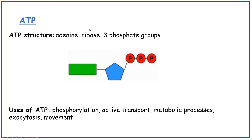ATP structure: adenine, ribose and three phosphate groups. So adenosine is made of an adenine base, a ribose sugar and three phosphate groups. Adenosine triphosphate — because there are three phosphates. Uses of ATP are phosphorylation, active transport, metabolic processes, exocytosis and movement.